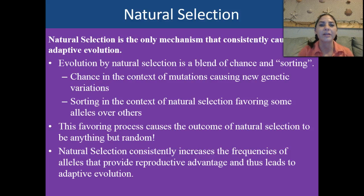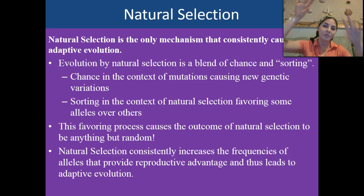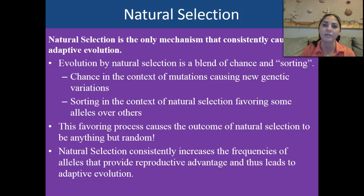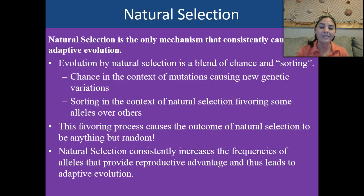Natural selection is the only mechanism that consistently causes adaptive evolution. Evolution by natural selection is a blend of chance and sorting — chance in the context that mutations randomly occur and cause new genetic variations, and sorting in the context that natural selection favors some alleles over others. For example, a monkey with the longest arms and tail can escape from predators and swing from branches more easily, so those individuals are going to breed and pass on their genes. This favoring process causes the outcome of natural selection to be anything but random — it selects for individuals better adapted to their environment. Natural selection consistently increases frequencies of alleles that provide reproductive advantage and leads to adaptive evolution.